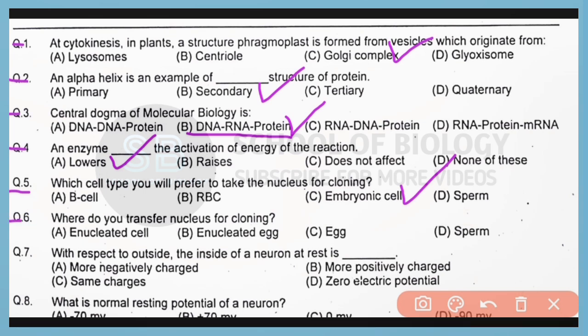Question 6. Where do you transfer the nucleus for cloning? The nucleus will be transferred into an enucleated egg. Correct answer is option B.